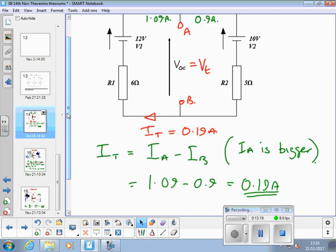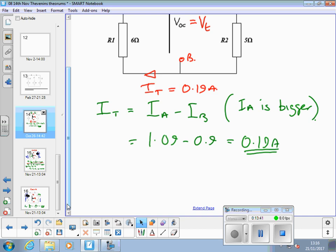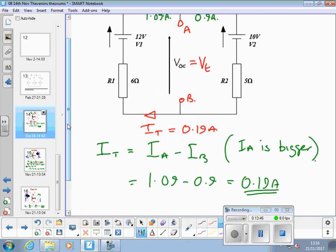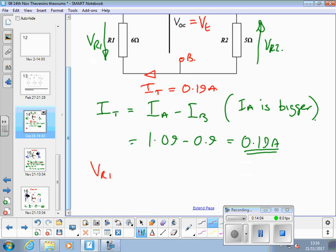So the actual current flowing, IT, is 0.19 amps. Now we can use that current to find the voltages, and then we'll do that process only once. So now we can find current flowing this way so VR1 is that way, current flowing down so VR2 is that way. VR1 is IT times R1, 0.19 times 6 equals 1.14 volts.